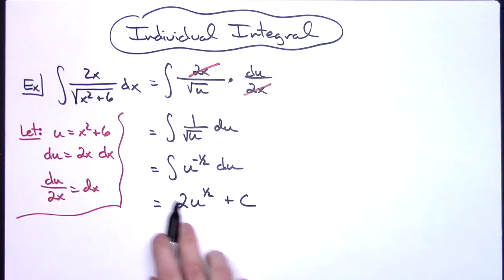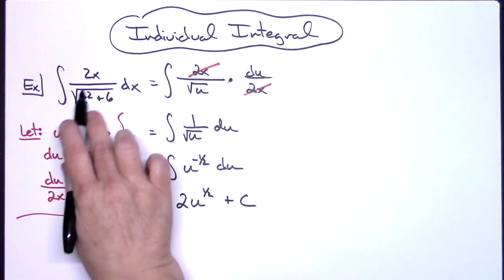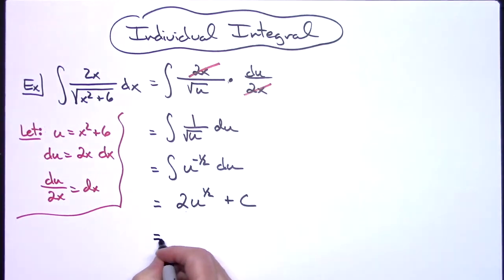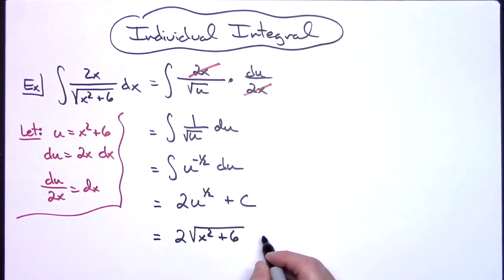Now I'm going to replace u with x squared plus 6. Since my original form had a square root in there, when I do that replacing, I'll make that a radical. So I have a final answer of 2 square root of x squared plus 6, plus C.